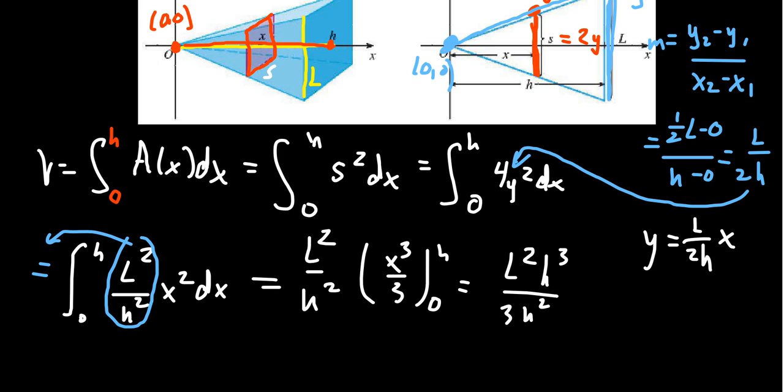And so we end up with L squared h cubed over 3h squared. There's some h's on top and bottom. They cancel. So h squared cancels with this right there, leaving just one h in the numerator. And then this reproduces the traditional pyramid volume formula. We're going to get the volume of a pyramid is one third the length squared times its height.